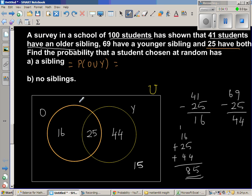Of course you have to add these numbers, but to talk about this rule, P of O union Y, that means this total area, is P of O plus P of Y minus P of O intersection Y. This area is called O intersection Y.